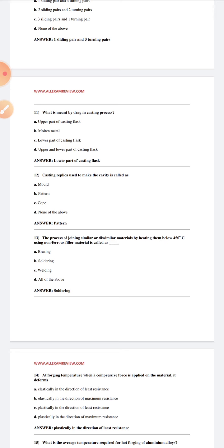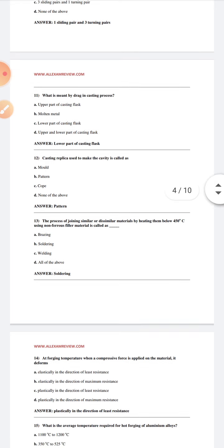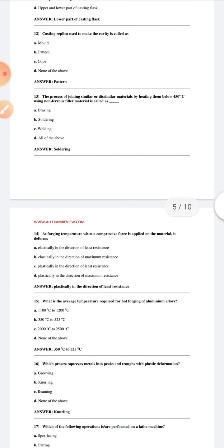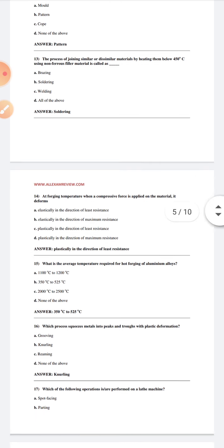The process of joining similar and dissimilar materials by heating them below 450 degrees Celsius using non-ferrous filler material is called soldering. At forging temperature, when a compressive force is applied on the material, it deforms plastically in the direction of least resistance.